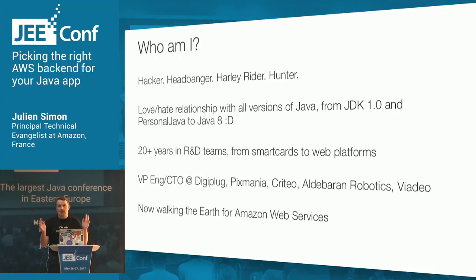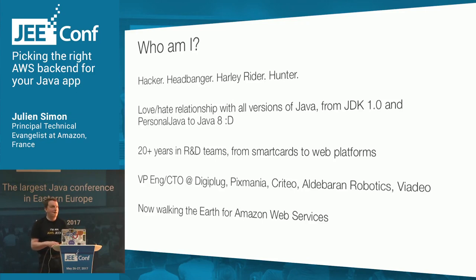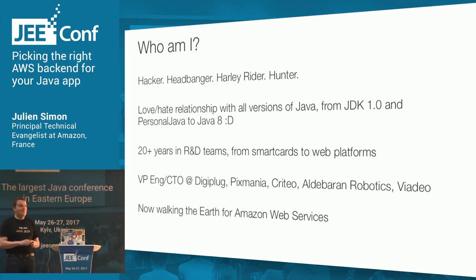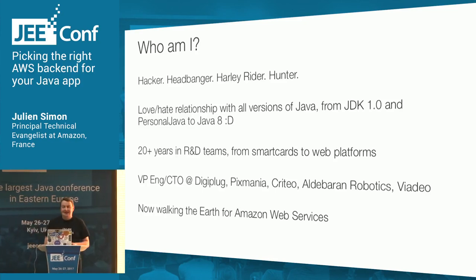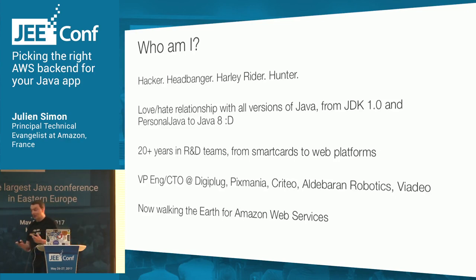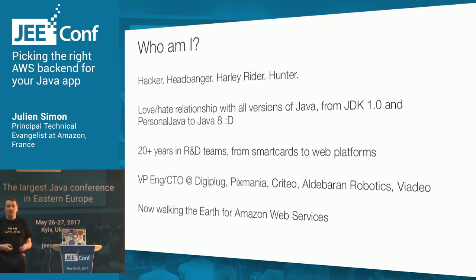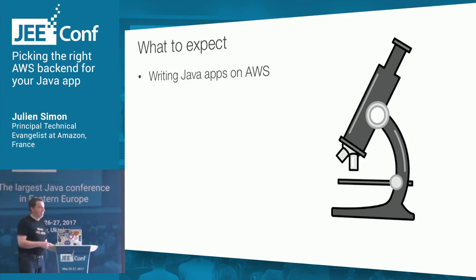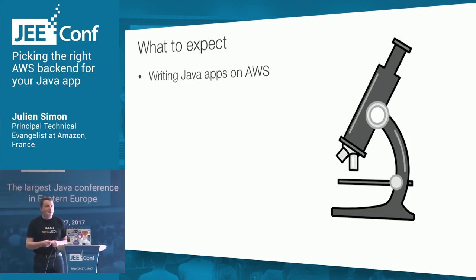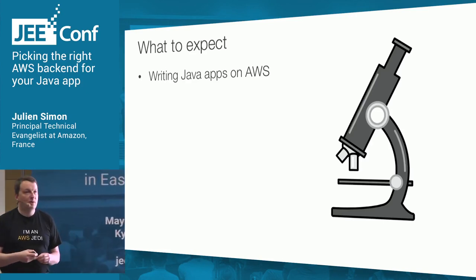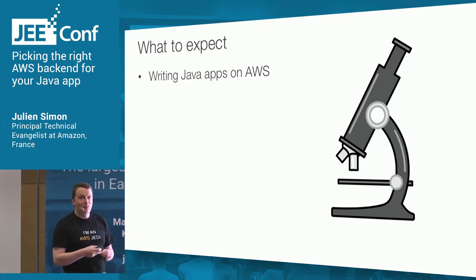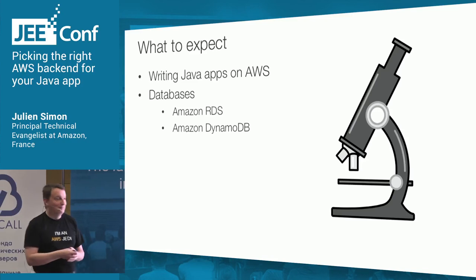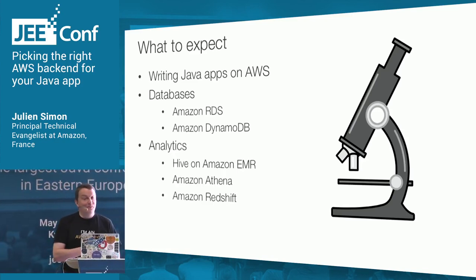If you have questions after the session, I'll be around, so feel free to ask. I love to answer questions. Today we're going to talk about AWS backends. This seems to be a Java conference, so we're going to use that — we're going to look at using those backends with Java, run some code, and do some demos. Maybe they will not work, and that's okay.